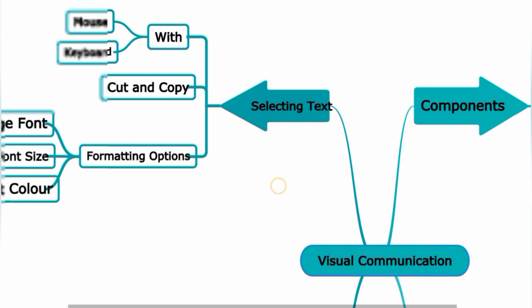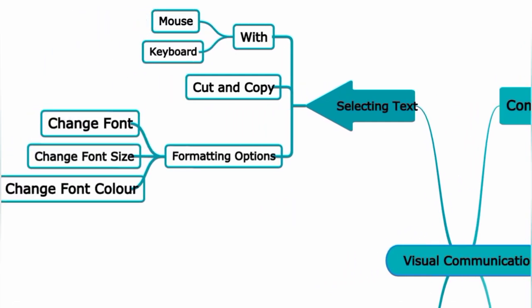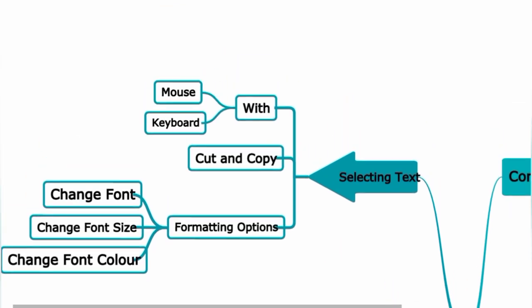Now, selecting text. You can select text using the mouse or keyboard. With the mouse, drag over the text to highlight it. With the keyboard, use the Shift key combined with arrow keys to select. Once selected, you can copy the text.